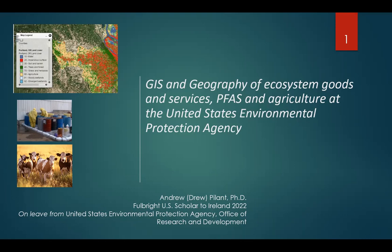The title is GIS and Geography of Ecosystem Goods and Services. The geography part was to hook the audience in; the GIS part reflects that everything discussed today is supported by GIS technology. PFAS — per and polyfluoroalkyl substances — is a class of emerging contaminants. Ecosystem goods and services are nature's benefits that are difficult to quantify but essential in decision-making. If we can't represent nature's benefits well, they tend to be ignored in environmental and economic decision-making.